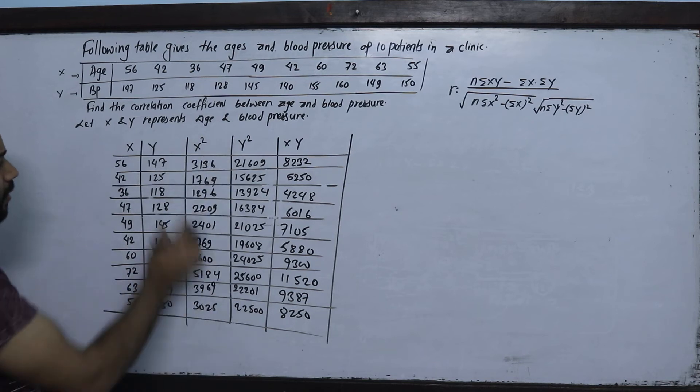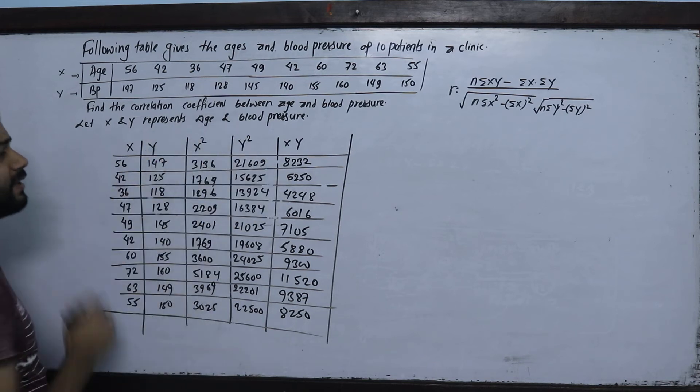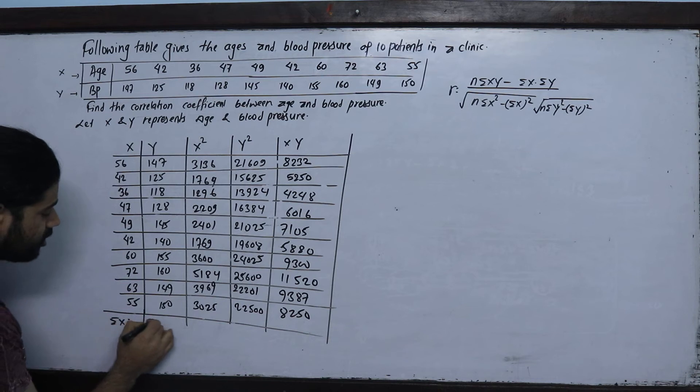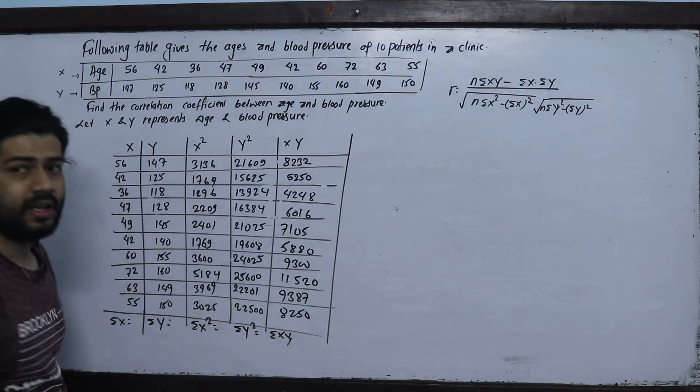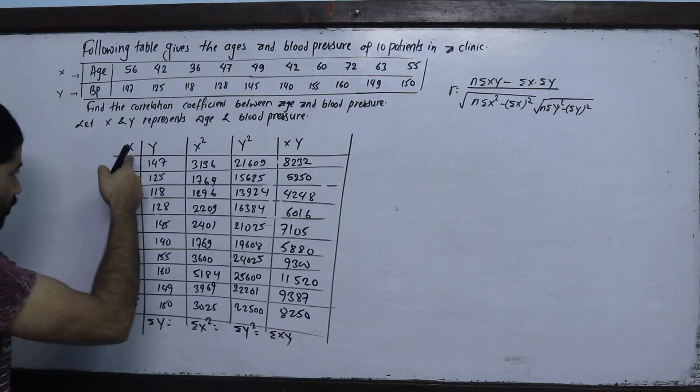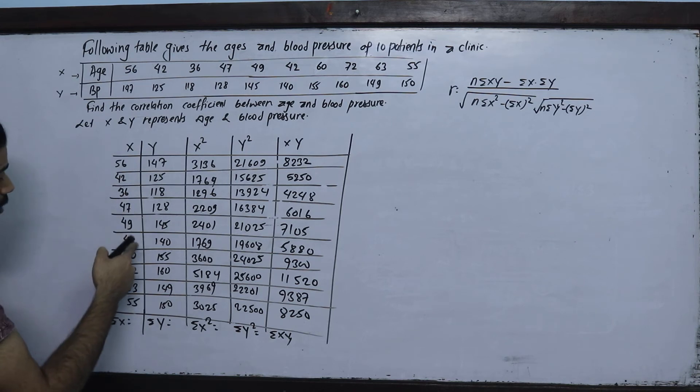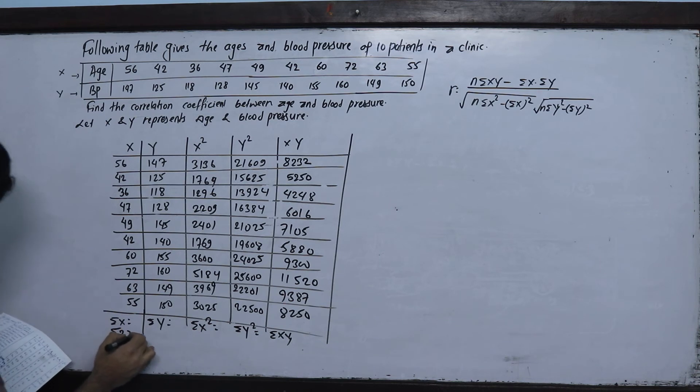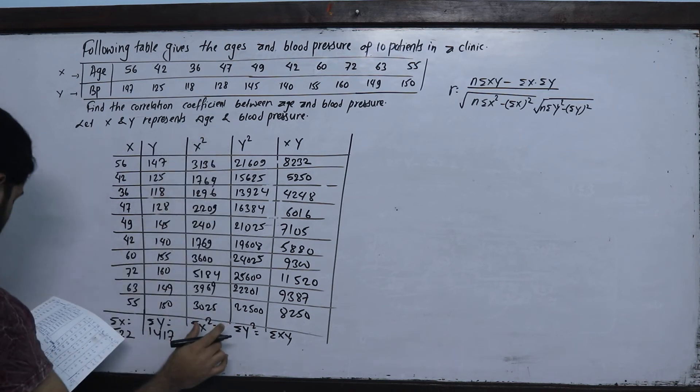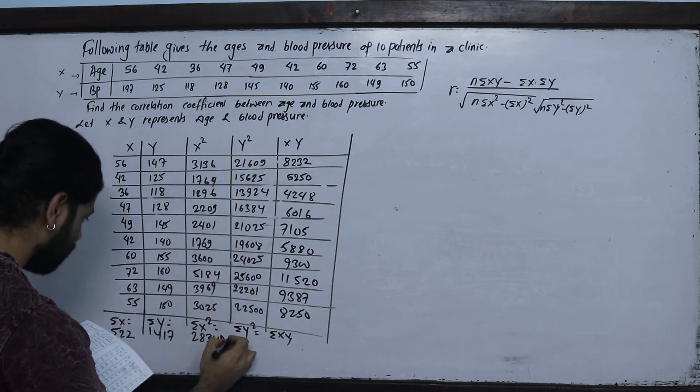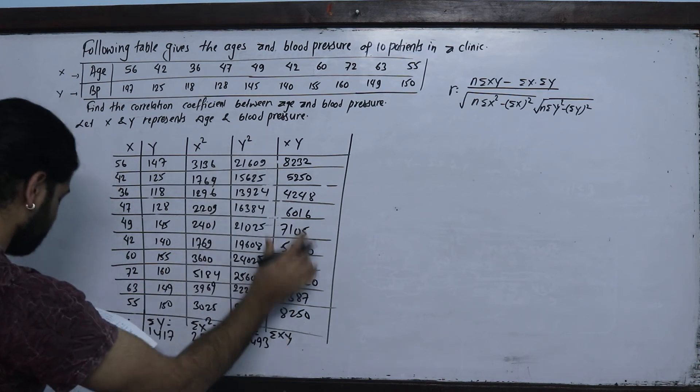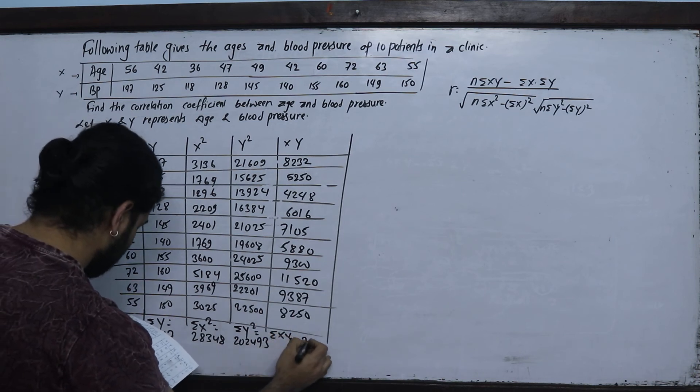Continuing xy: 60 into 155 equals 9300, 72 into 160 equals 11520, 63 into 149 equals 9387, 55 into 150 equals 8250. Now we calculate summation x, summation y, summation x square, summation y square, and summation xy.